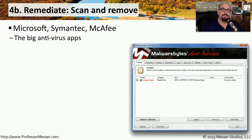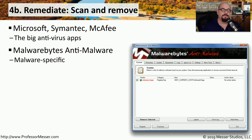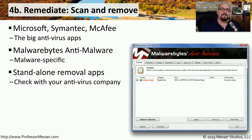Microsoft, Symantec, McAfee, and other large antivirus companies make software that can find and remove this type of malware. Some companies make anti-malware software very focused on removing specific kinds of infestations — for example, Malwarebytes is very good at finding and removing these types of malware. There are also many standalone apps specifically designed to remove different types of malware, and sometimes they contain exactly the code you need to remove nasty bits of malware from a system.